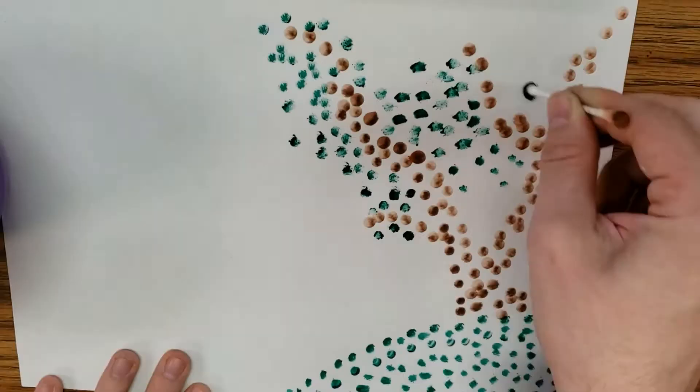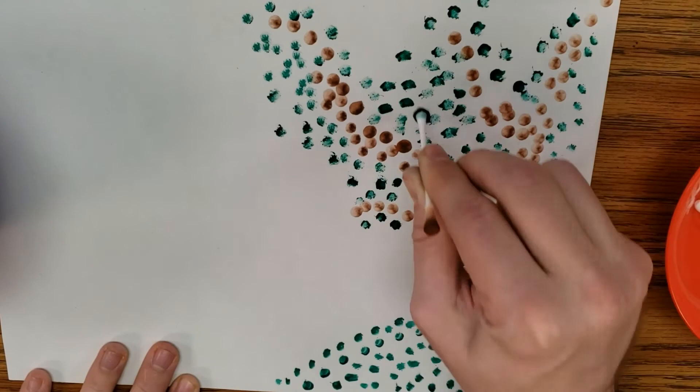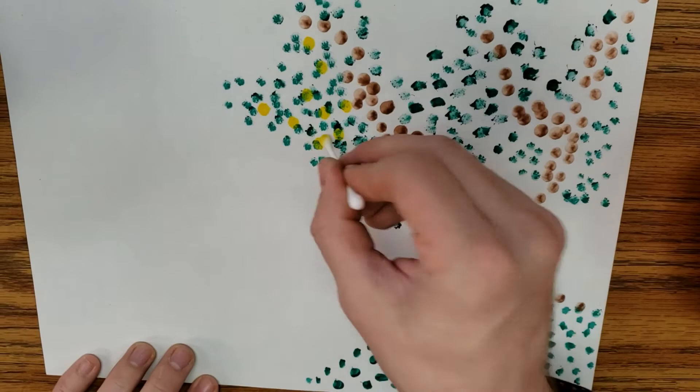I also created a dotted outline around my boat using black paint so that it would show up even better in the water.